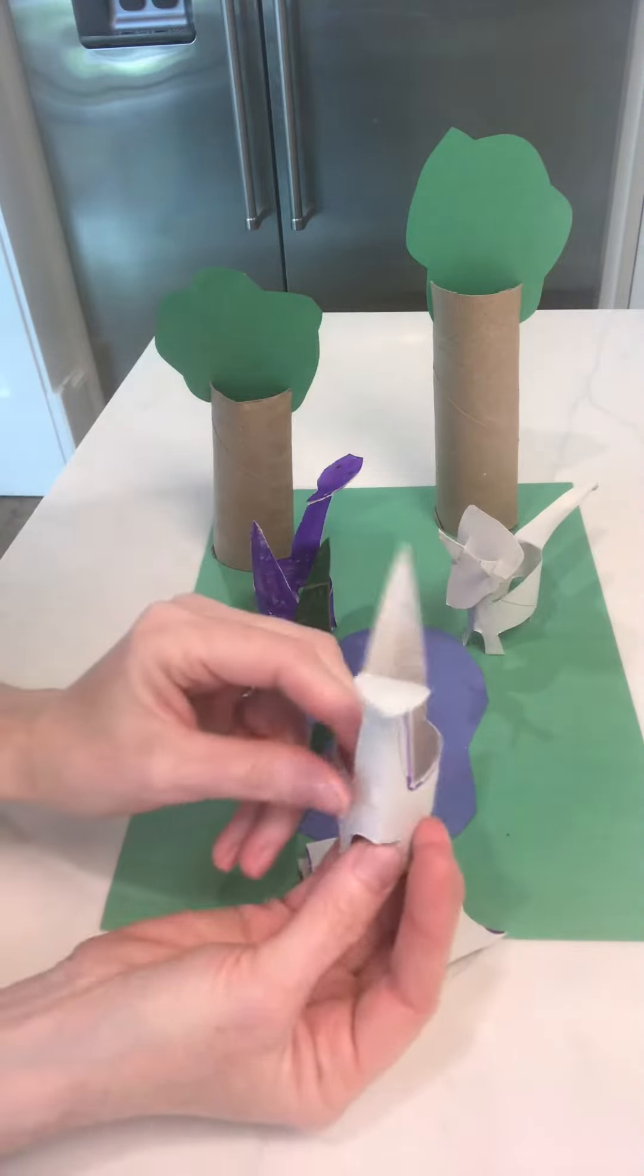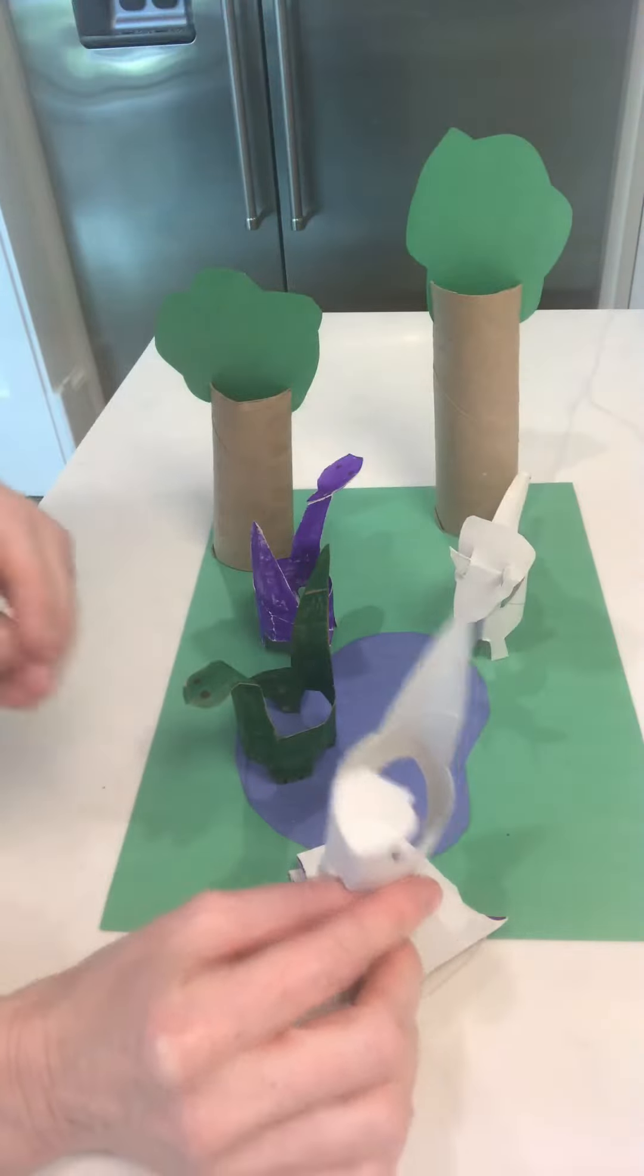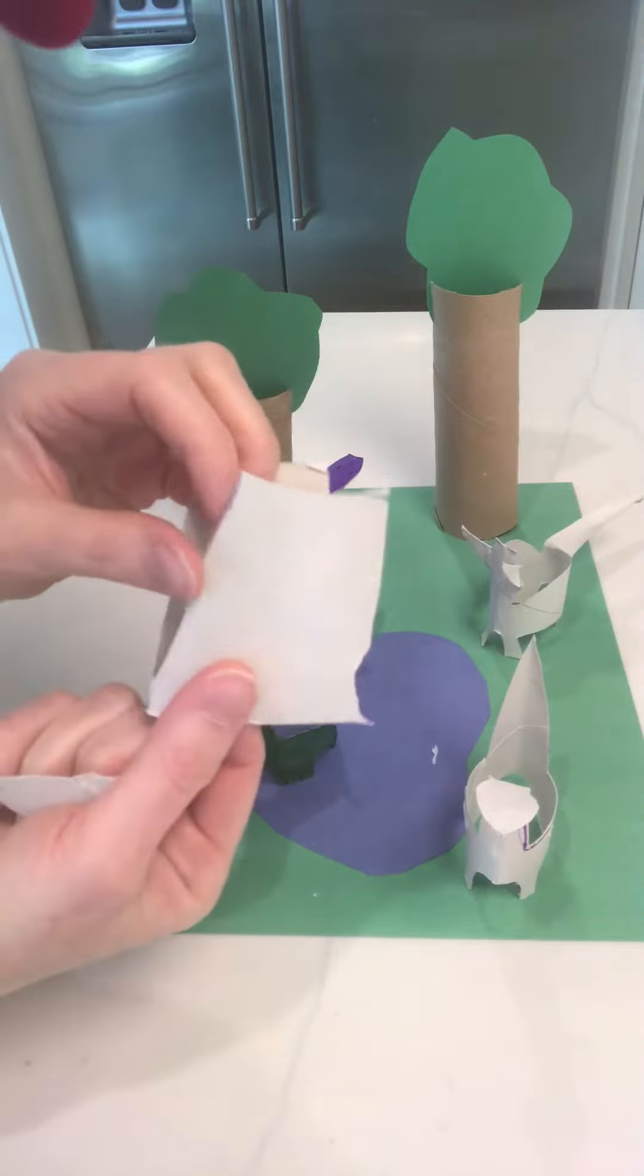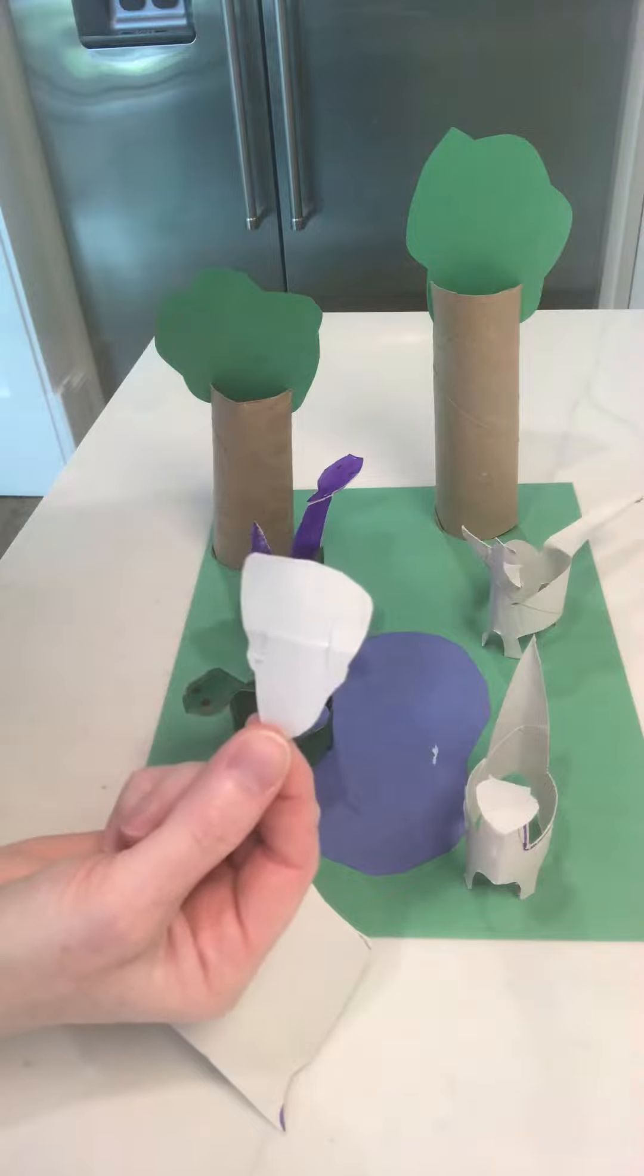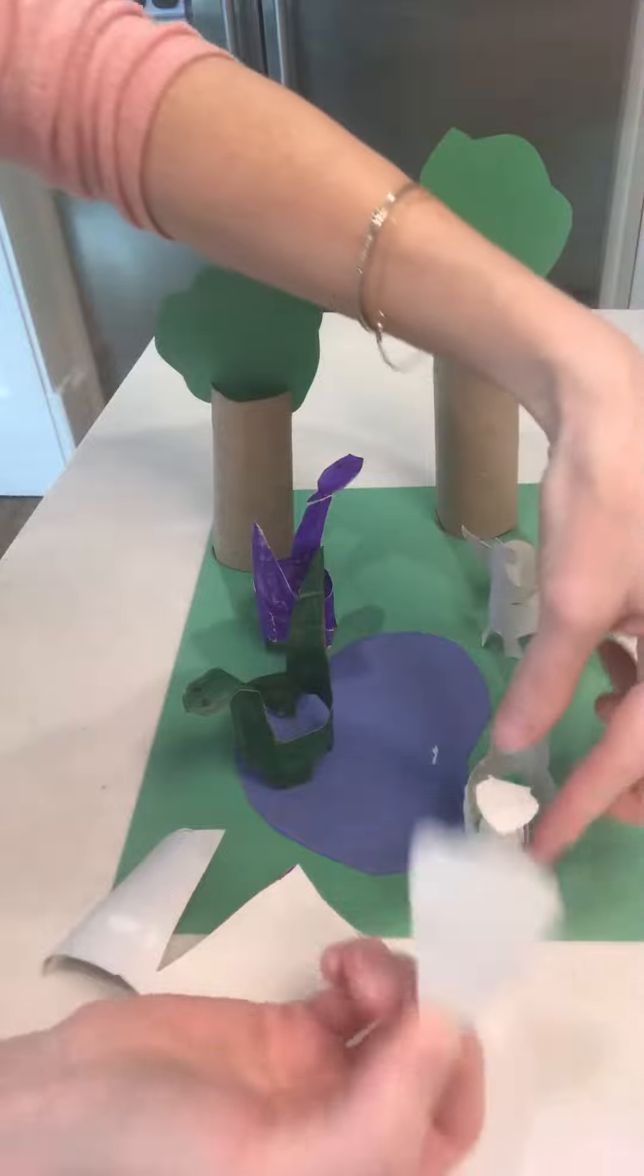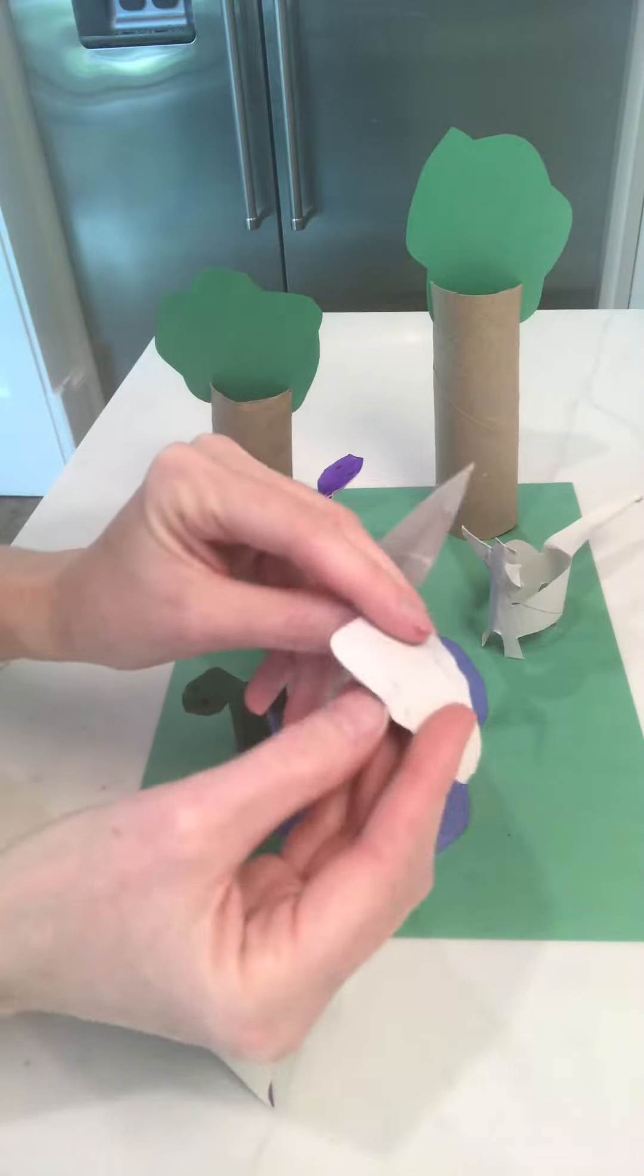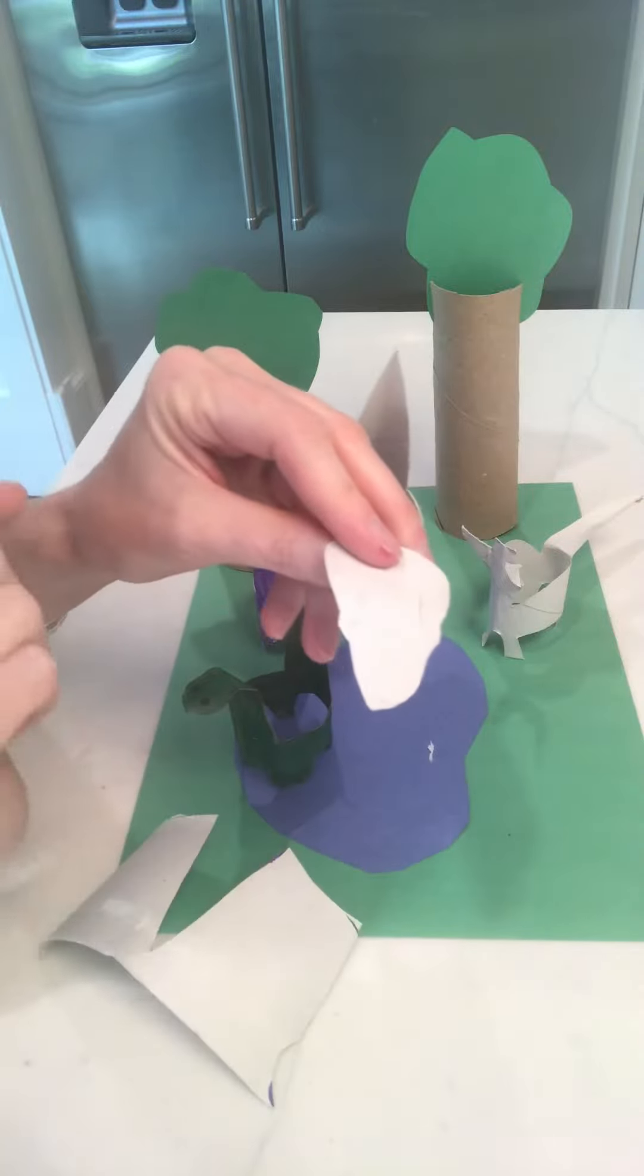Now another option if you wanted to try to make the Triceratops but didn't want it to be too confusing is you could take a piece of paper or a piece of leftover scrap from your toilet paper roll or paper towel roll and cut out the shape of a Triceratops head or any dinosaur's head, T-Rex, anything that you want. And then you could glue it directly onto the other head that you made for your Gryphonosaurus. And then you could glue on horns, three horns, and a fierce face.